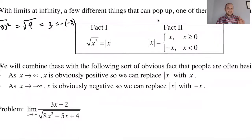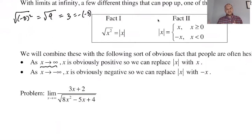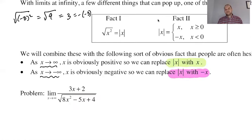We're going to combine those two facts with this idea: as x approaches infinity, x is obviously positive — like 50, 100, 1000, these are positive numbers — which means we can always replace the absolute value of x with just x. And if x is going to negative infinity — negative 10, negative a billion, negative a trillion, definitely negative numbers — we can replace the absolute value of x with the opposite of x. So these are a big deal.